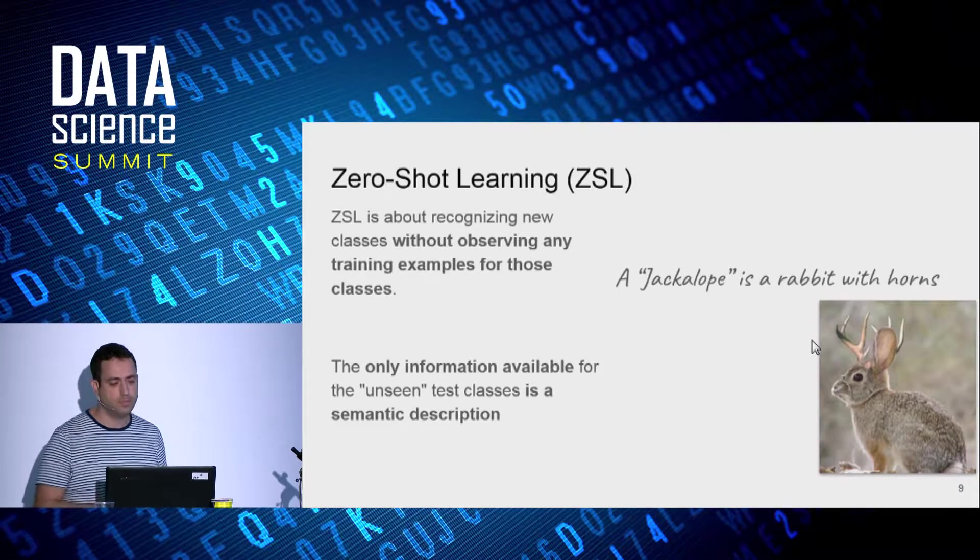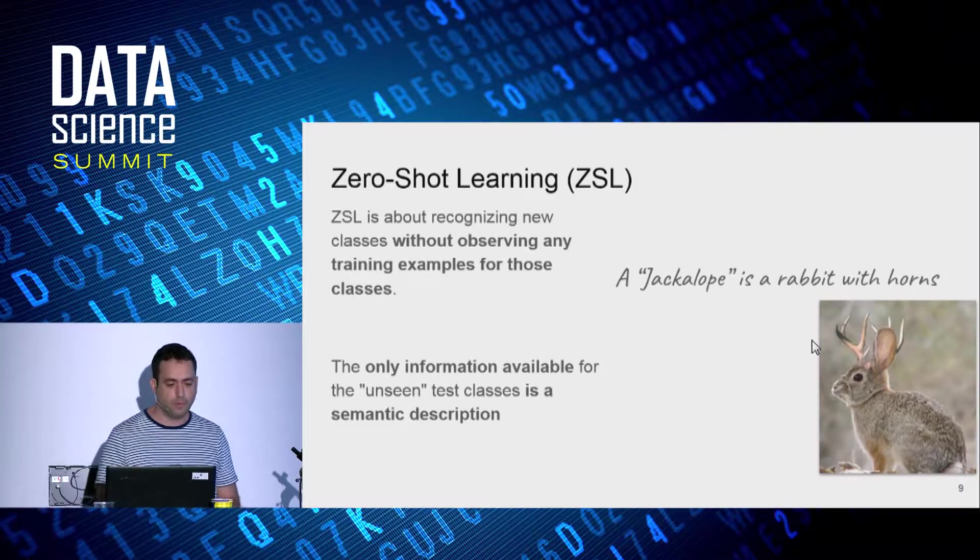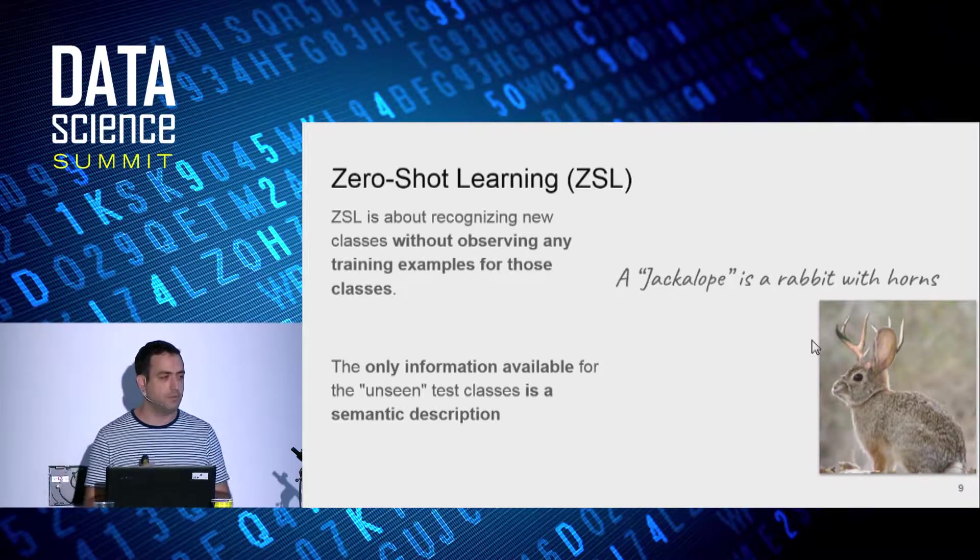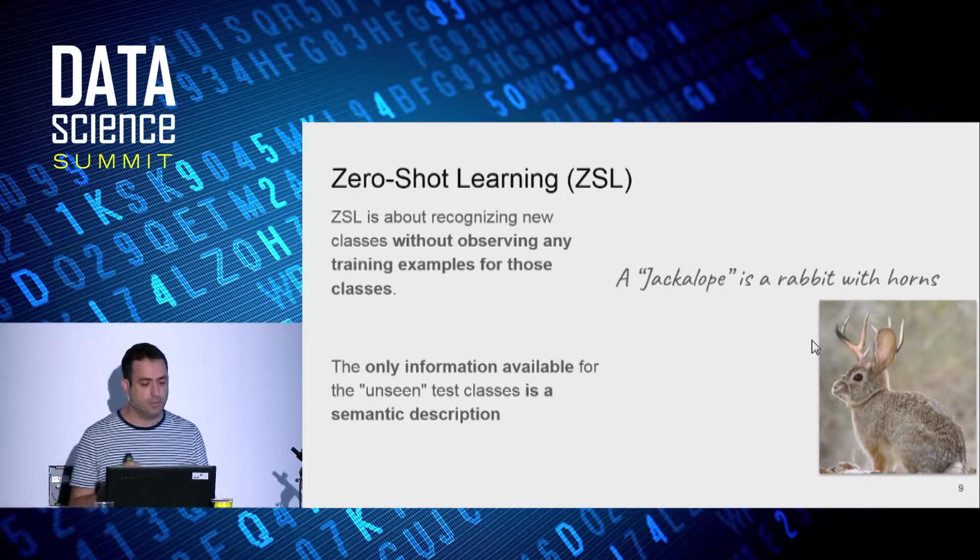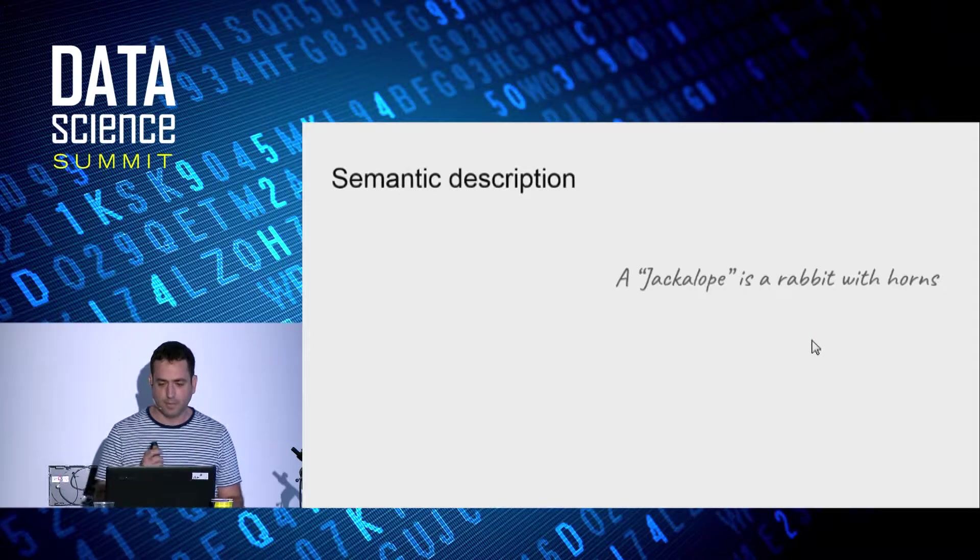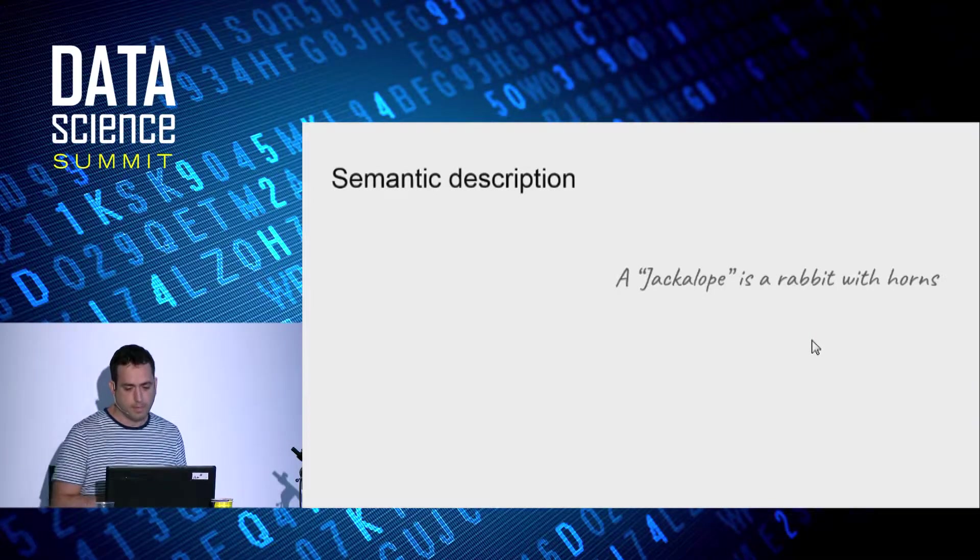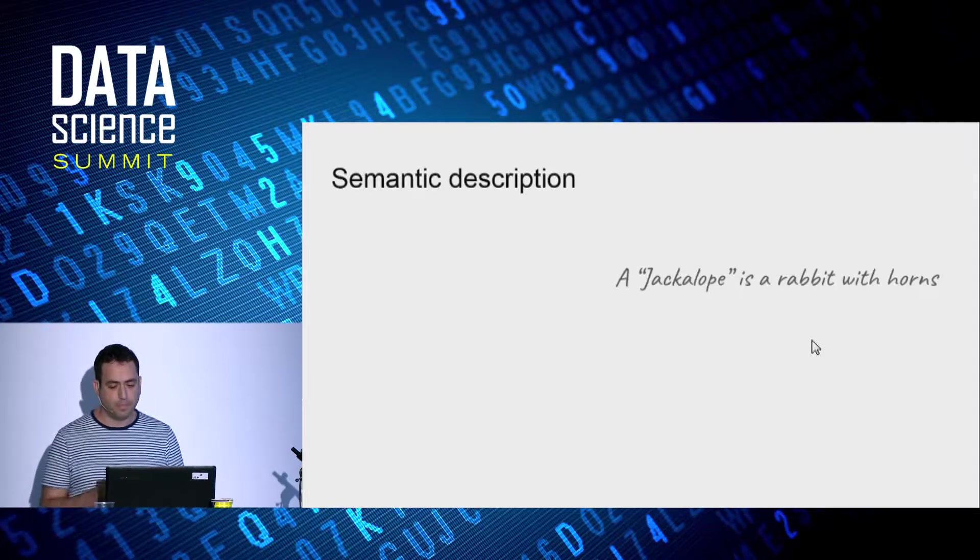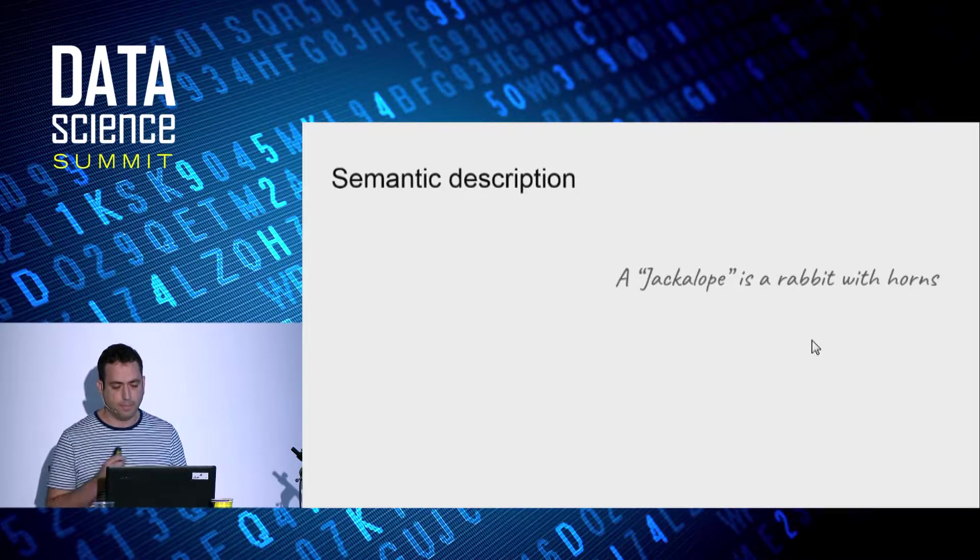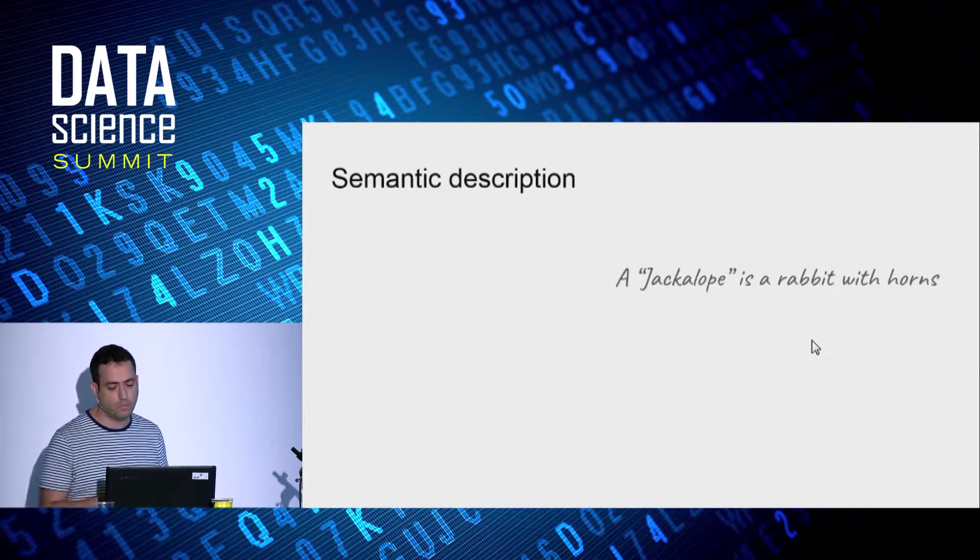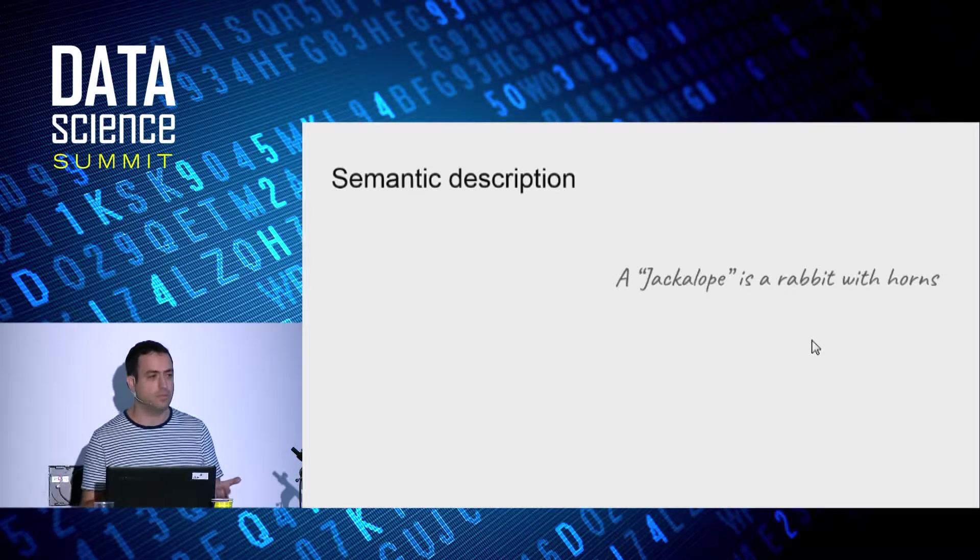So this is the task of zero-shot learning, which is about recognizing new classes without observing any training examples for those classes. The only information available for the unseen test classes is a semantic description. In this example, the semantic description is a rabbit with horns. The zero-shot learning task builds a prediction model for new classes based on the semantic description. The model predicts a new class as a composition of basic elements, here it's rabbit and horns.